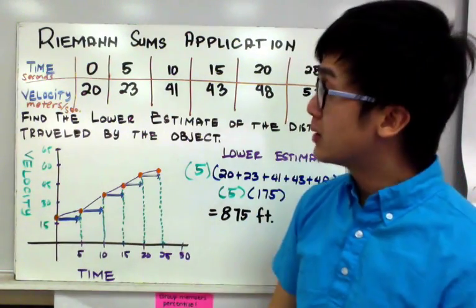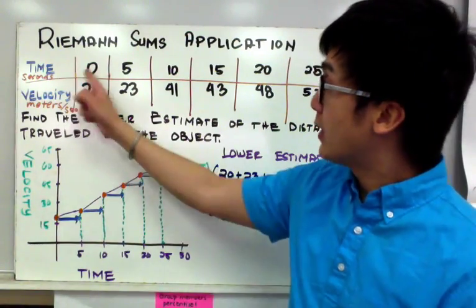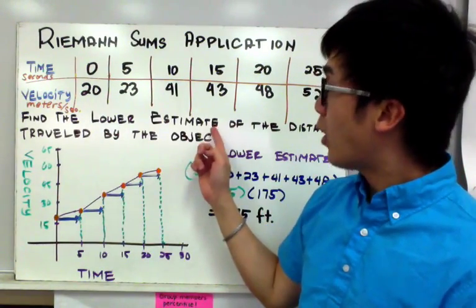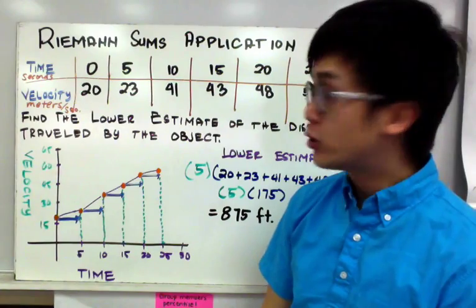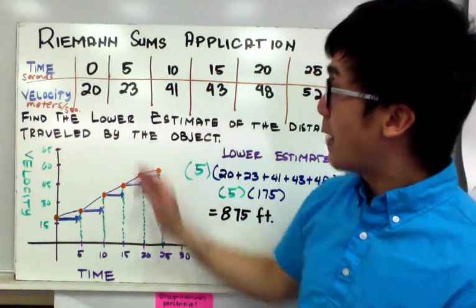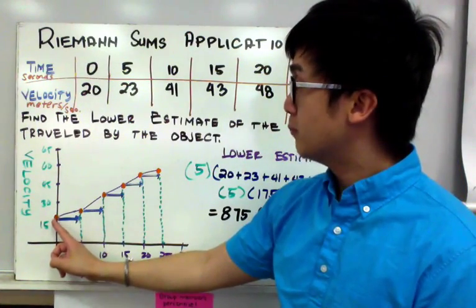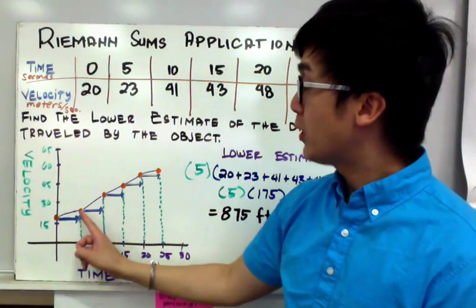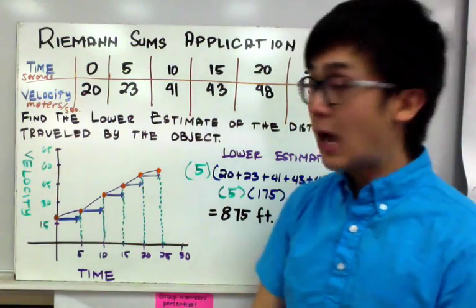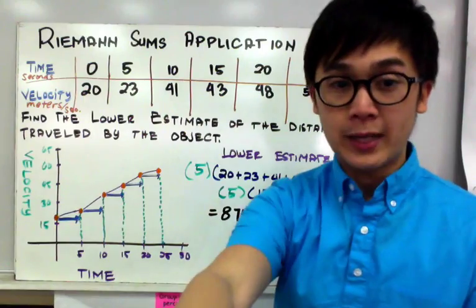This is how we use Riemann Sums in approximating the distance traveled by a moving object given its time and velocity. Now if we have the lower estimate, we also have the upper estimate. To find the upper estimated value, I'm going to use the same table, but instead of starting from 0, I'm going to start at 5 going backwards — that's how I'll apply the upper estimated value.